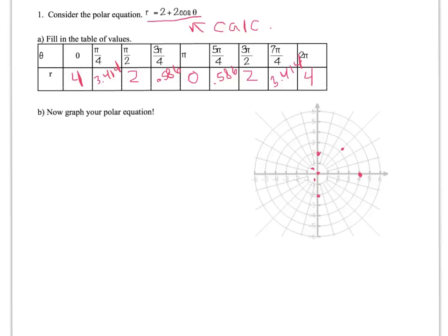7 pi over 4, I walk out a little more than 3. And then at 2 pi, I'm back to 4.